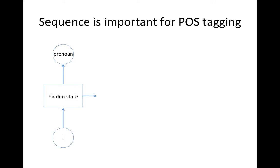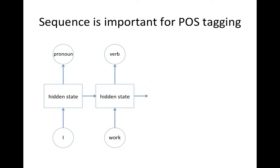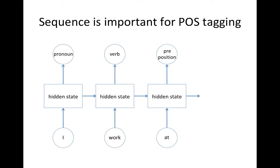Here is how RNN infers our example. 'I' is the current input and there is no previous state; let's assume it is predicted as pronoun. Then, when the input is 'work,' the output will be based on the current input 'work' and the previous word 'I.' Then, when the input is 'at,' the output will be based on the current input 'at' and the previous state of 'I' and 'work.'